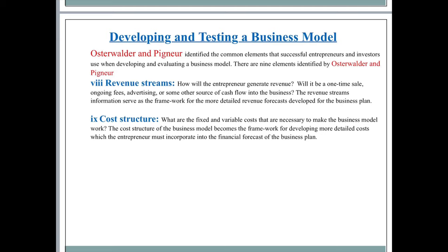The eighth point is revenue stream — how will the entrepreneur generate revenue? Will it be a one-time sale, ongoing fees, advertising, or some other source of cash flow into the business? The revenue stream information serves as a framework for the more detailed revenue forecast developed from the business plan. You must know how you will generate revenue, how you will raise funds — will you charge your customer once or have ongoing fees, and how much revenue you generate through advertising.